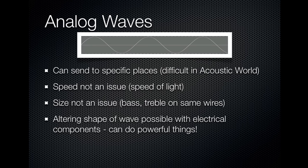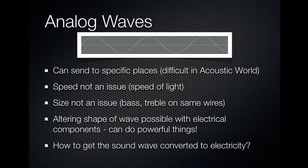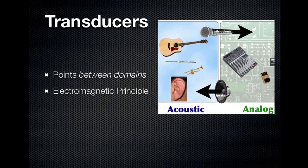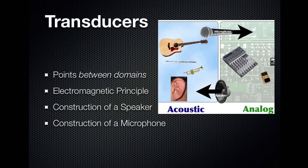And we can do lots of powerful things. The question is: how do we get the sound wave converted into an electrical wave? The answer is transducers. These are the points between the acoustic and analog domains, and most — but not all of them — operate on the electromagnetic principle. We'll look briefly at the construction of a speaker and a microphone, the two most common types of transducers used in audio.